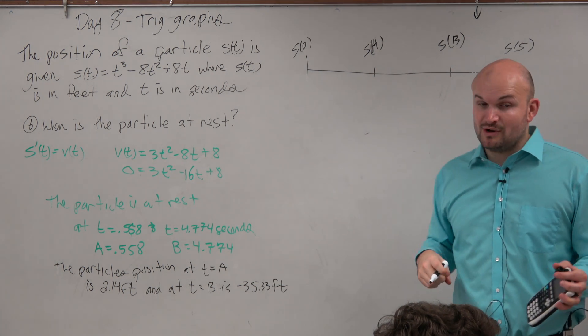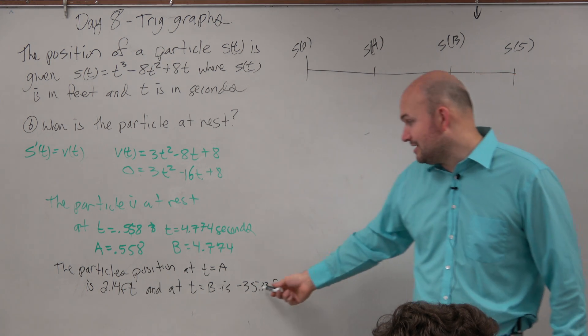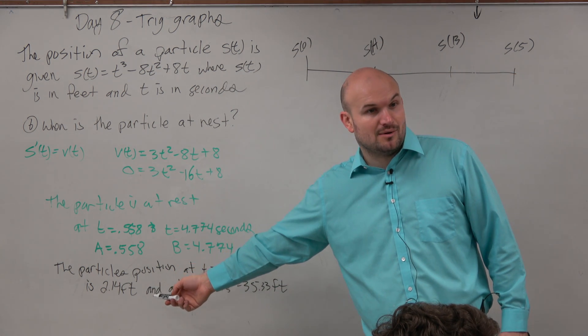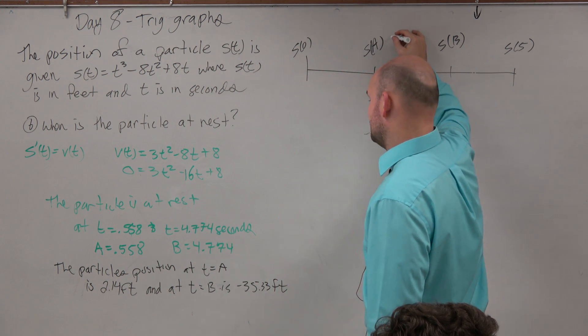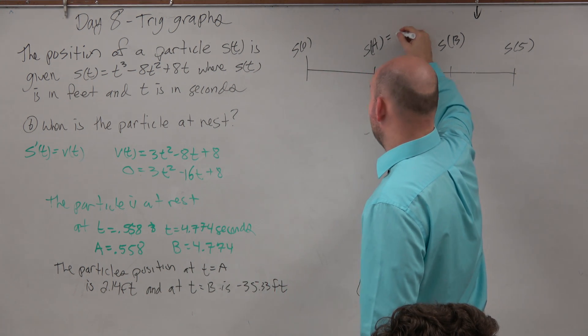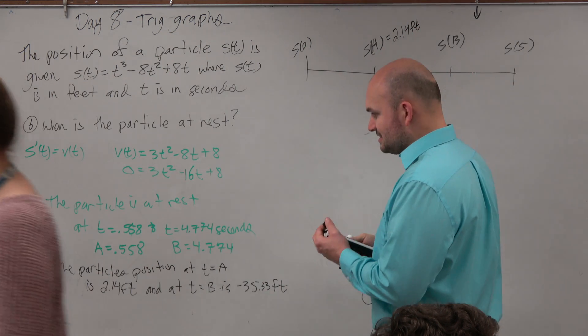Then, in the previous question, we even helped you guys out. I even gave you guys what those values were, or we figured out what those values were, right? So the position here for s of a was 2.14 feet.